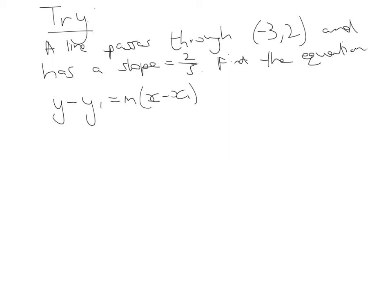So what we're going to do is we're going to say, okay, we know m, we've got that now, it's 2 fifths, but we also need an x1 and a y1. So we're going to label our two points, x1, y1. And we're going to substitute it into our equation. So substituting that into our equation, we have y minus 2 equals 2 fifths x minus minus 3.